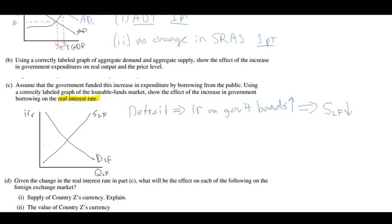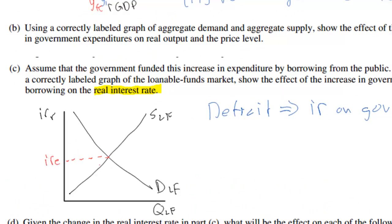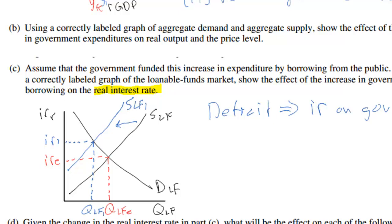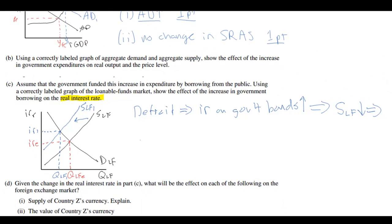Households will wish to buy government bonds rather than saving their money in banks. So we put our original equilibrium interest rate IRE and original quantity QLFE on the graph. The increase in interest rates on government bonds attracts savers toward government bonds and away from the private loanable funds market, reducing the supply to SLF1. This results in a higher equilibrium interest rate IR1 and a lower quantity of funds demanded for private investment QLF1. Ultimately, the government's increased budget deficit leads to higher real interest rates.